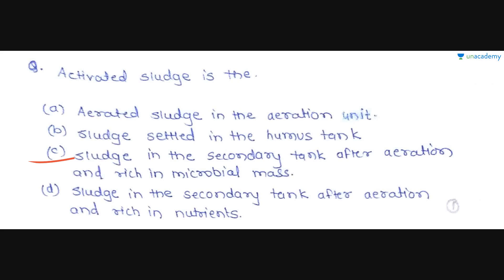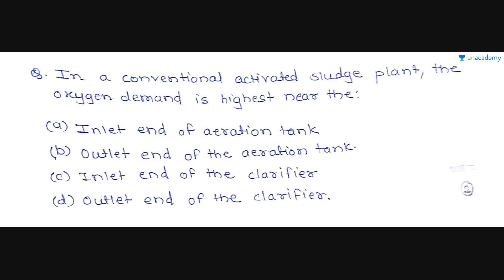The settled sludge in the secondary sedimentation tank is called activated sludge. It is rich in microbial mass and not in nutrients. It is actually a sludge containing a large concentration of highly active aerobic microorganisms. So option C is the correct option — activated sludge is the sludge in the secondary tank after aeration and rich in microbial mass.